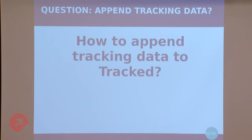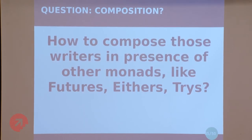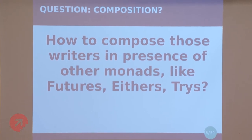Another question was: how do you append tracking data to an already-tracked object? Writer tell — sort of yes. So there's another extension method on Tracked that takes TrackingData and delegates to tell. And then: how do we compose things? Usually these simple examples are fine, but in practice you have other things like Futures, Tries, Eithers. How do you compose them? I've heard someone say monad transformers — that's an option, but I didn't want to go there at that moment. I didn't want to get into another horror story with all of that.